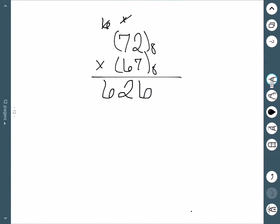Now we'll multiply by the 6. 6 times 2 is 12. 8 goes into 12 once with 4 left over. 6 times 7 is 42 plus 1 is 43. 8 goes into 43 5 times with 3 left over. And then we can bring down the 5 since there is no more multiplication.